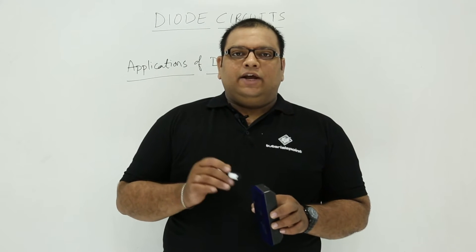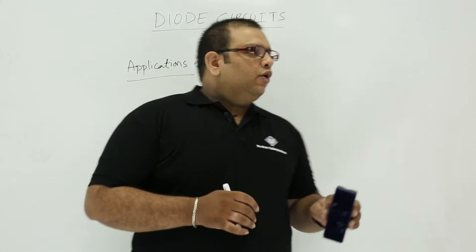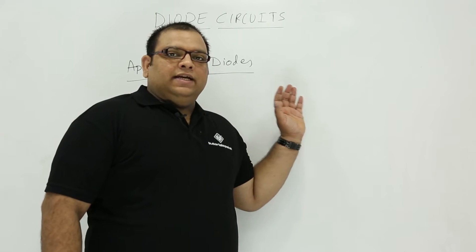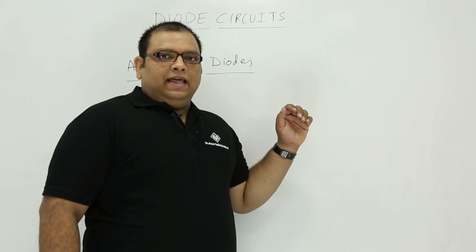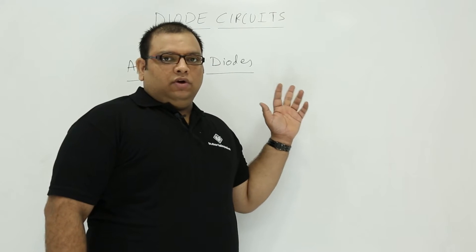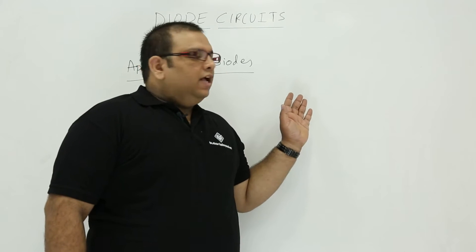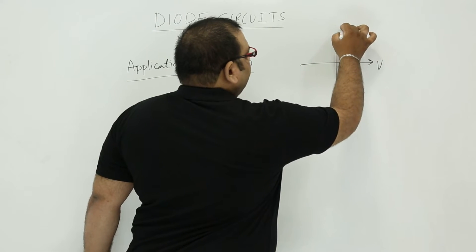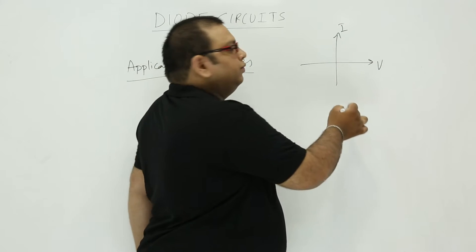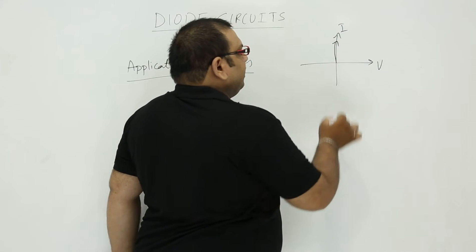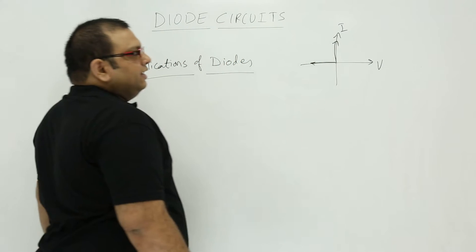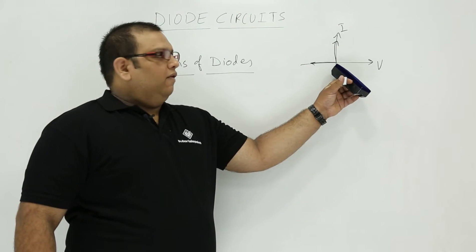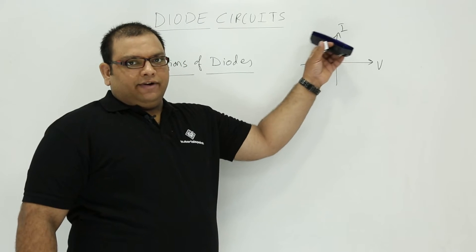Let us discuss diode circuit applications. As we discussed earlier, a diode is a two-terminal device with two operating regions: one is the forward bias region and the other is the reverse bias region. Looking at the characteristics of a diode, when voltage is more than zero it allows very high current, and when voltage is less than zero it allows zero current. So a diode will pass current in only one direction.